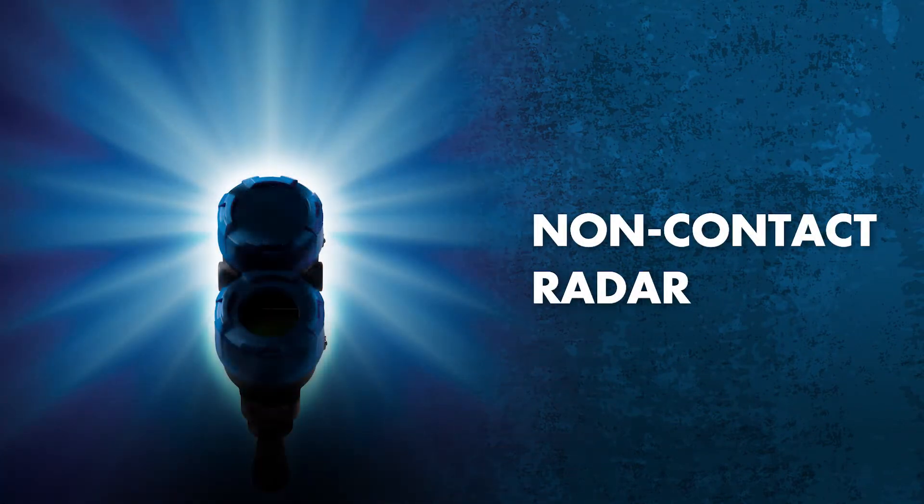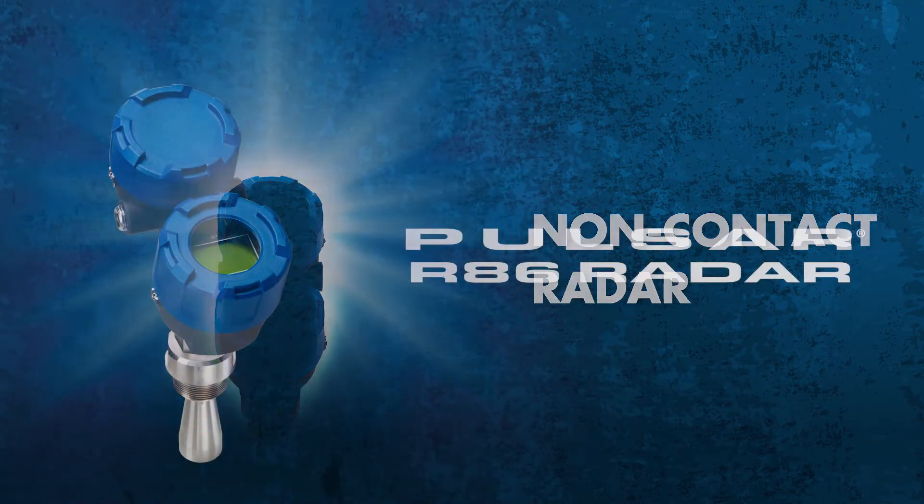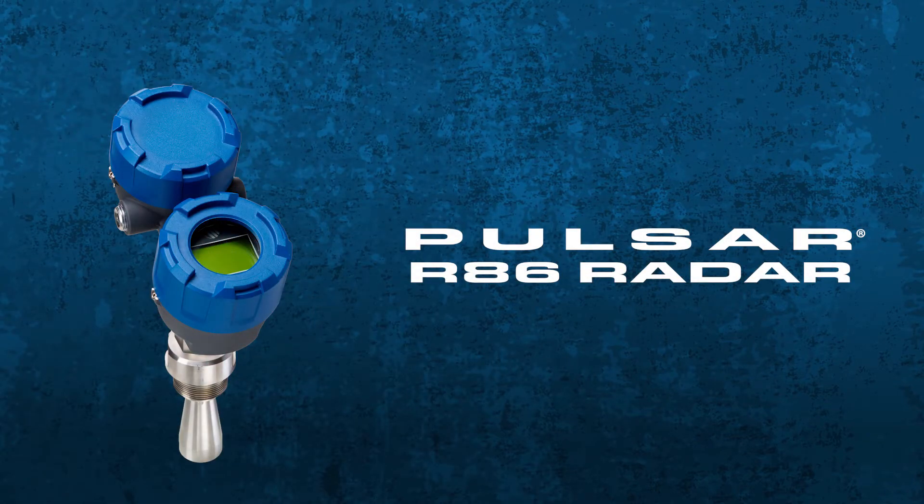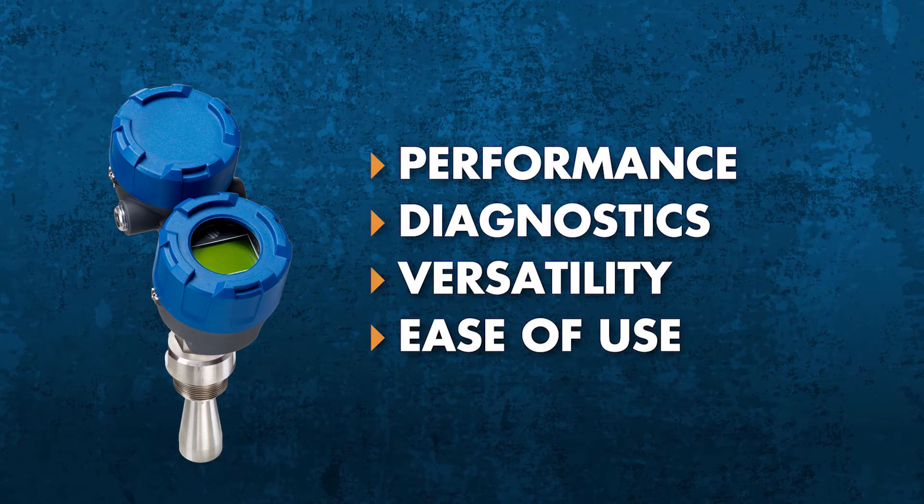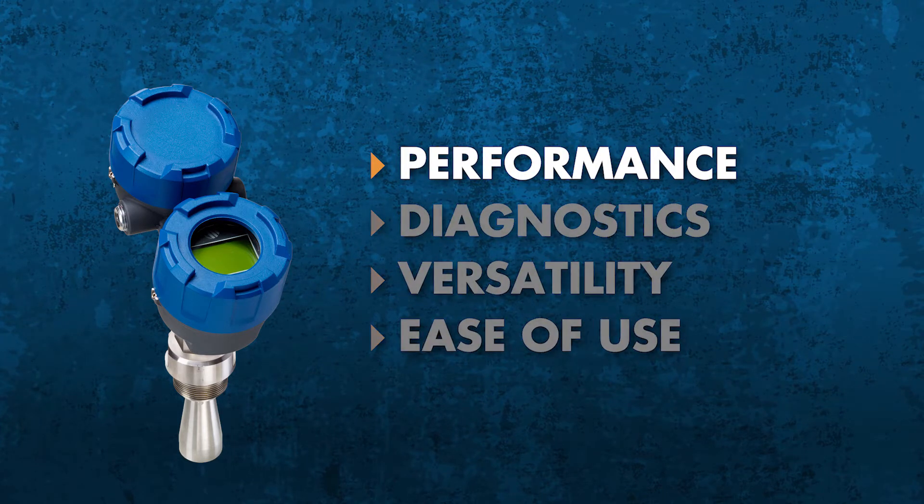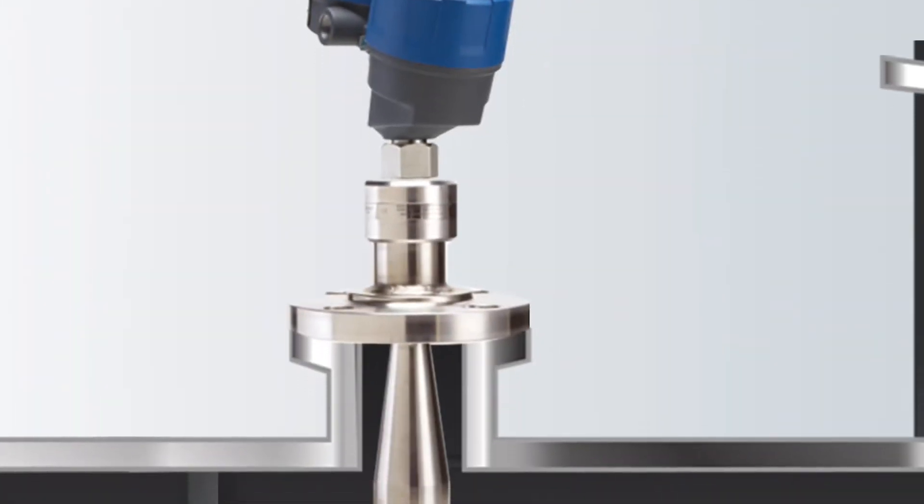The Magnetrol family of radar solutions also includes non-contact radar. And now there's a transmitter that's smarter on every level: the Pulsar Model R86. Like the Model 706, it delivers improved performance in the most demanding process conditions.